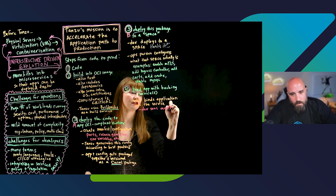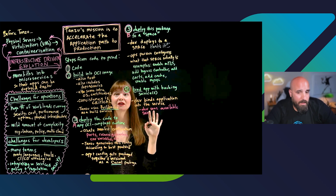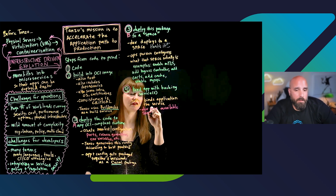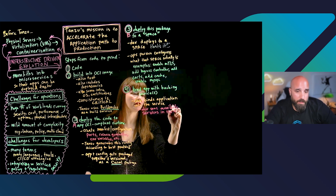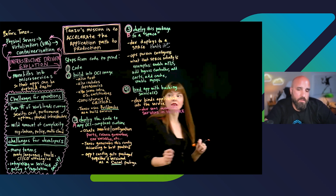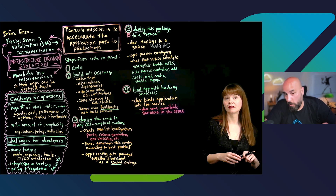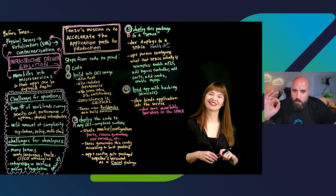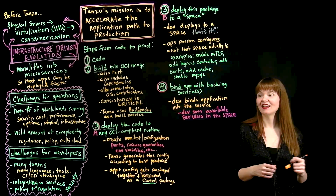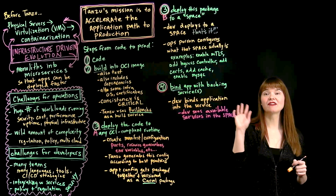The developer will see a list of services in the space and can decide to bind the application into one — that's it. How is it discoverable? When a developer runs 'tanzu service list,' they see data services or other external services already configured in the space and ready to use. They won't see the marketplace — that's what the platform engineer sees to decide whether to deploy a service or create an external service. From the developer side, we're making it as simple as possible: list the application, list the services, bind the application into the service.